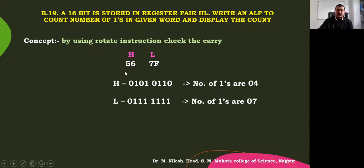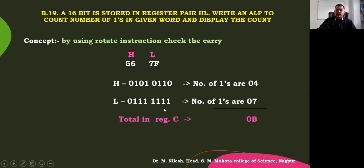H contains 56H. In binary, 5 is 0101 and 6 is 0110, so the number of ones in H is 4. For L, which contains 7FH: 7 in binary is 0111 and F is 1111, so the number of ones in that byte is 4 plus 3, that is 7. The total number of ones is 11 in decimal, which in hexadecimal is 0B. That is the answer we are expecting.